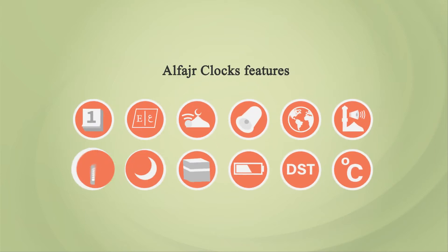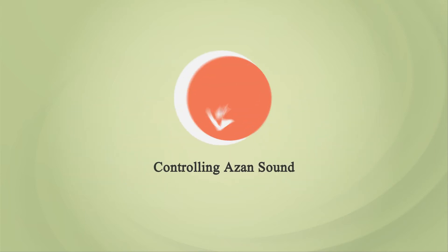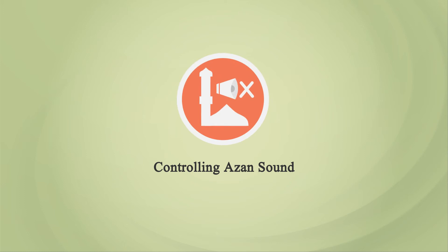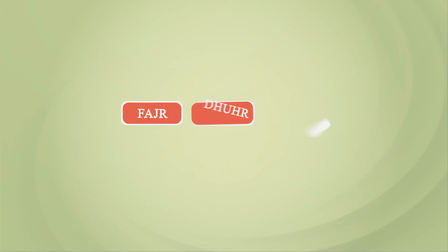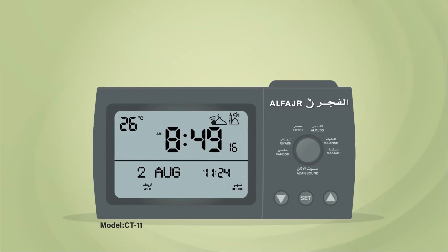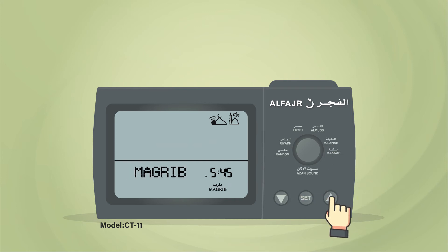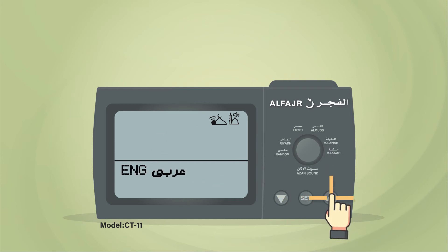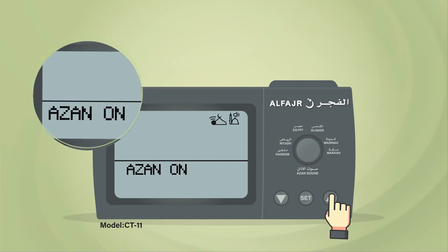Al-Fajr clock features: controlling Adhan sound. You can disable particular Adhan sounds. For example, to disable Dhuhr and Isha Adhan sounds, go to the Adhan control screen, then press and hold Set.